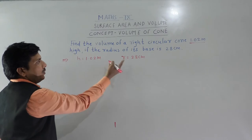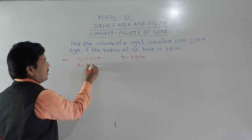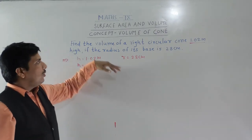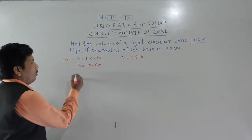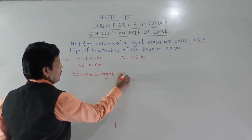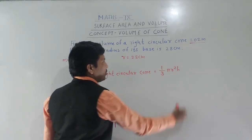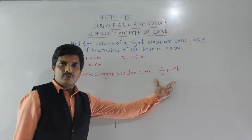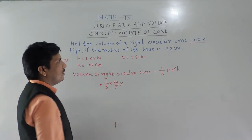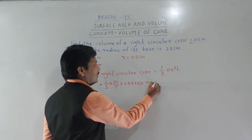We convert the height into centimeters by multiplying by 100, since 1 meter equals 100 centimeters. So h equals 102 centimeters, and radius is 28 centimeters. Now we use the formula: volume of right circular cone equals one by three pi r squared h. Substituting pi as 22 by 7, radius as 28, and height as 102 centimeters.